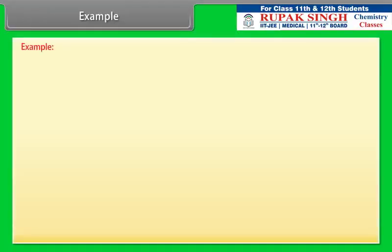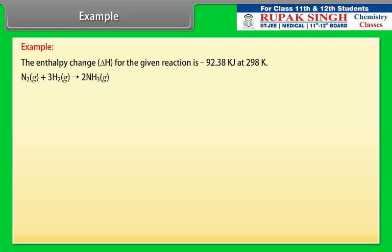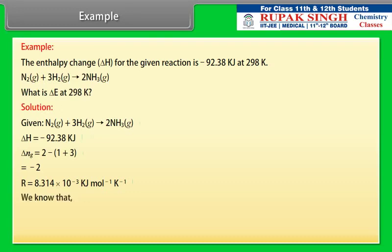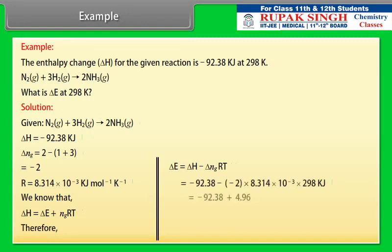Example on the relation between ΔH and ΔE: the enthalpy change ΔH for the given reaction is −92.38 kJ at 298 K. What is ΔE at 298 K? Given: ΔH = −92.38 kJ, ΔNg = 2 − (1 + 3) = −2, R = 8.314 × 10⁻³ kJ/mol/K. Using ΔH = ΔE + ΔNgRT, therefore ΔE = ΔH − ΔNgRT. Substituting the values, ΔE = −87.42 kJ.